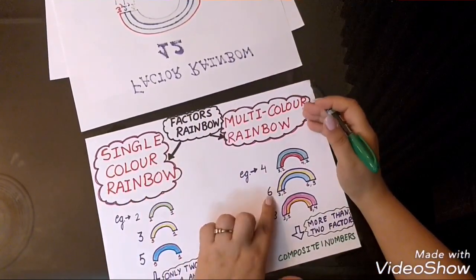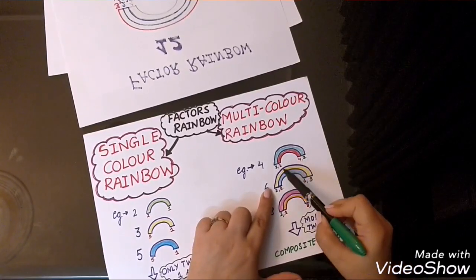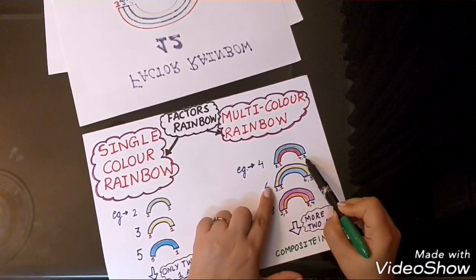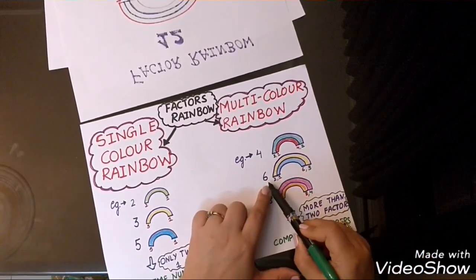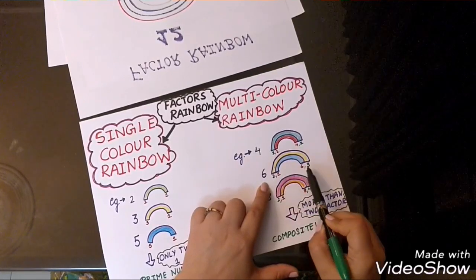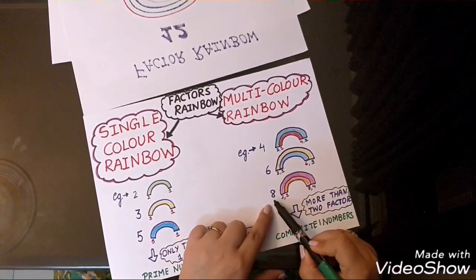Now, let's move to the multi-color rainbows. In these rainbows, we can see there are many factors. 1, 4, 2 are the factors of 4. Similarly, in case of 6, 1, 2, 3 and 6 are the factors of 6.